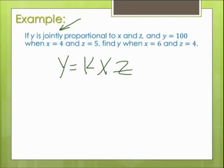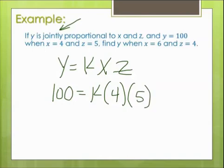Alright, so step number two, find k. So y is 100 when x is 4 and z is 5. So 4 times 5 is 20. 100 divided by 20 is 5. So k equals 5.